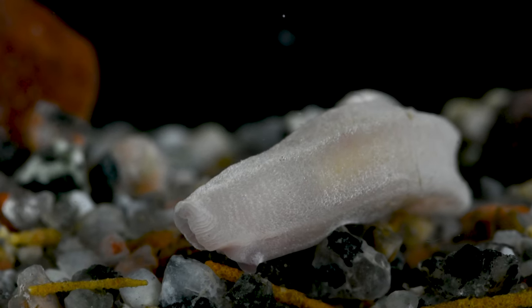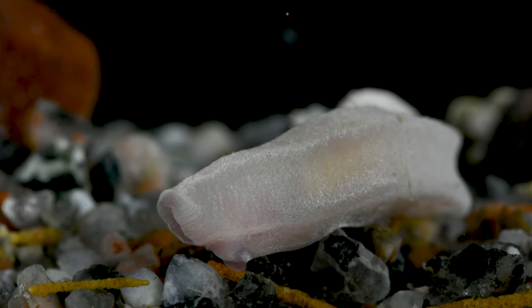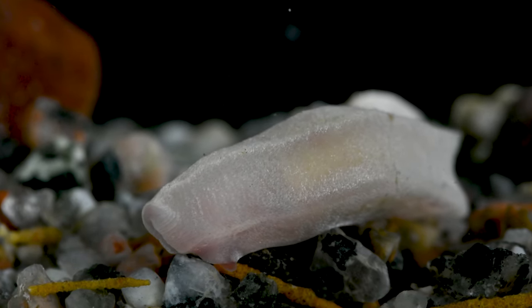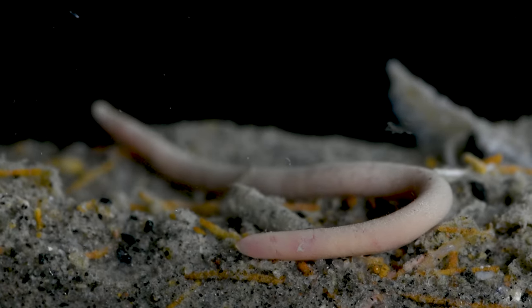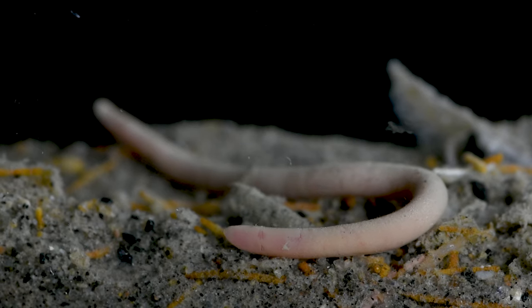Solenogasters don't have the shells which are common among many other mollusks. Instead, they are covered in tiny scales or spines called sclerites. Like shells, these sclerites are made of calcium carbonate, making them very hard.